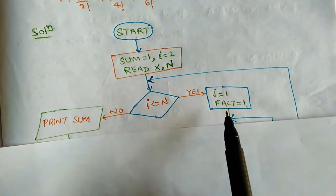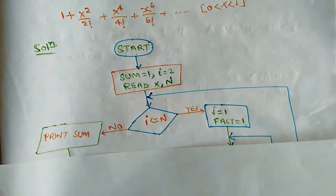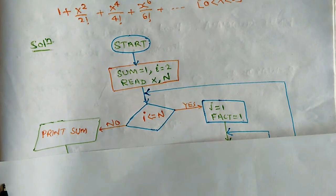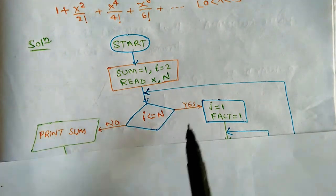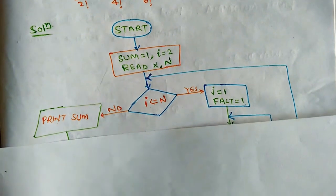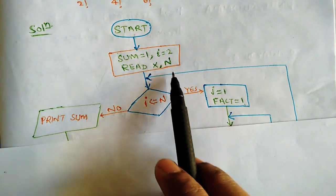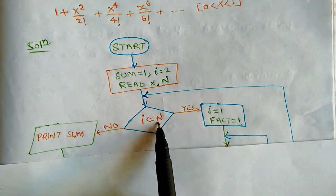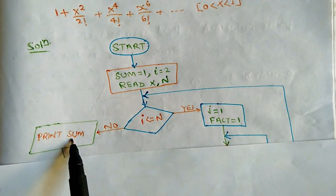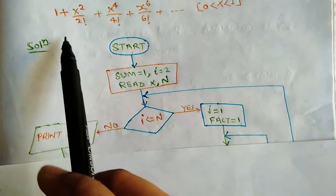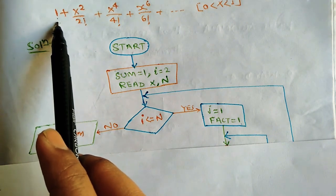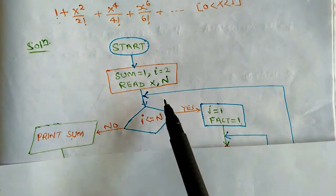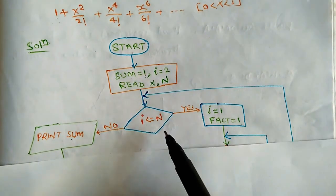We focus on the even-numbered factorials — 2!, 4! — and we increment i by 2 each time. Now, if the i value starts at 2 and the n value is 0, the condition will be false. In that case, we print the sum. The reason sum is initialized to 1 is that x⁰/0! is always 1, so the minimum value of sum is 1.